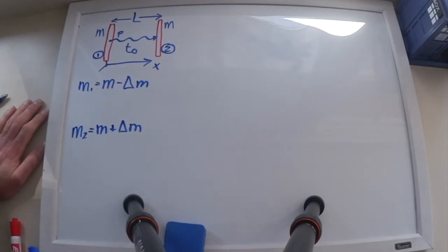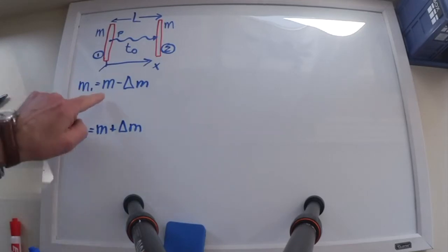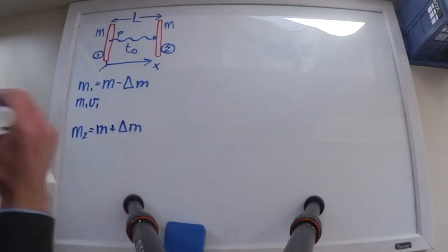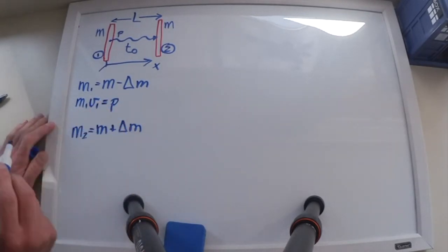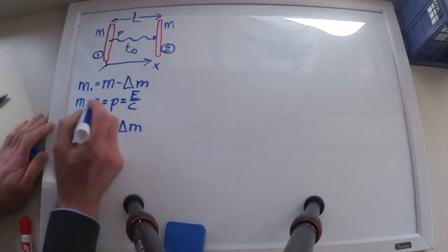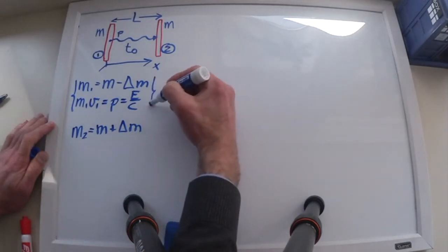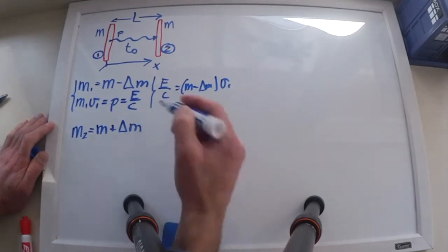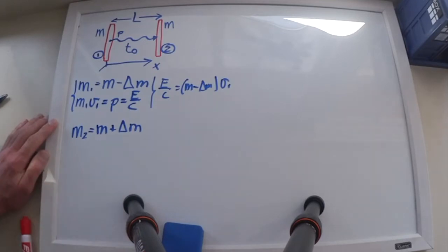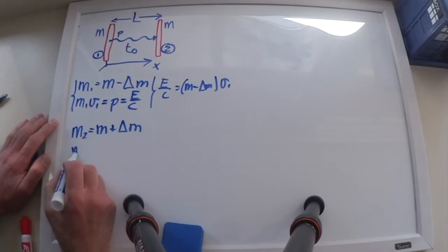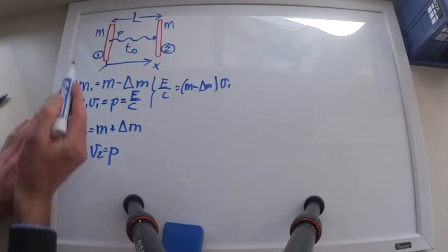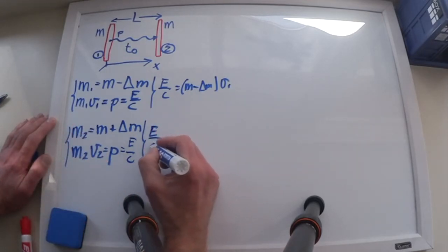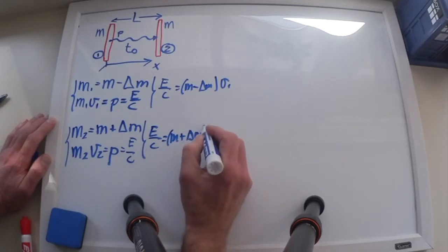The initial separation between both walls is L. Both walls initially have the same mass M. There is a momentum on the photon traveling to the right when it's emitted, and the photon needs a time T0 to go from wall one to wall two. When the photon is emitted, wall number one will have a mass M minus delta M, and because of conservation of linear momentum, it will gain a momentum M1V1 going to the left, which in magnitude is the same as the momentum of the photon P, which is E over C, from electromagnetism. We can write that E over C equals M minus delta M times V1. Wall two has a mass M2 equals M plus delta M when it absorbs the photon, and from conservation of momentum, M2V2 equals E over C, so E over C equals M plus delta M times V2.